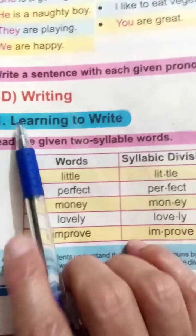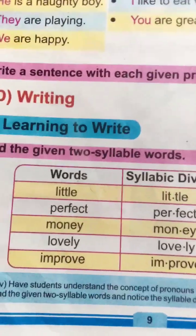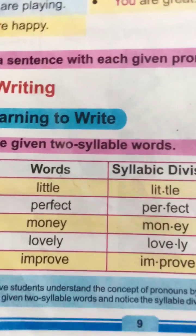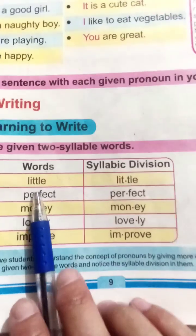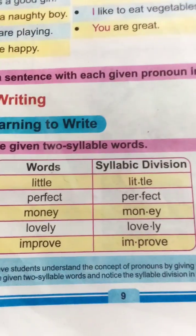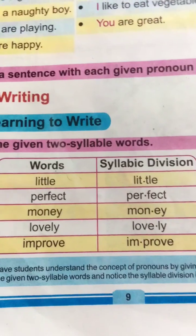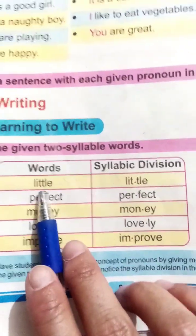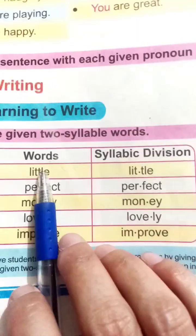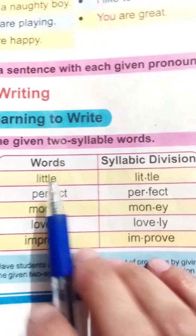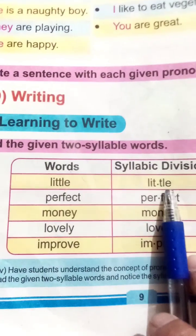Writing section - Learning to write, likhna sikhein. Read the given two-syllable words. Two syllable words - ye wo words hain jo do hisson mein bole jate hain, do parts mein. For example: the word 'little' - it has two parts: lit-tle.